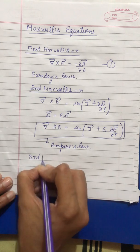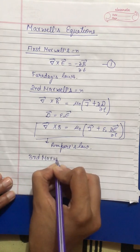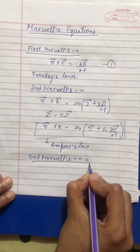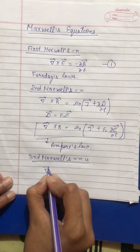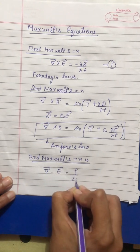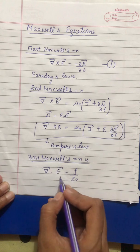Third Maxwell equation is del dot E is equals to rho upon epsilon naught. This is a third Maxwell equation.